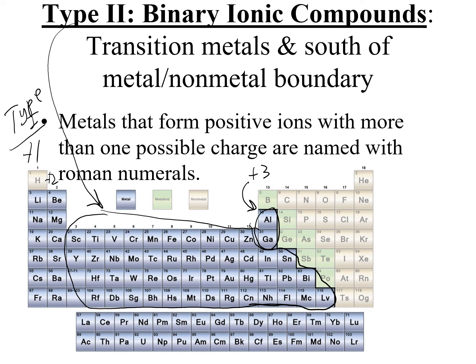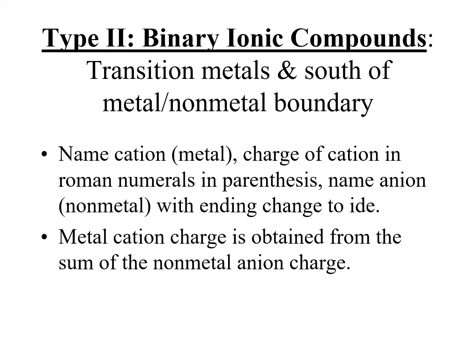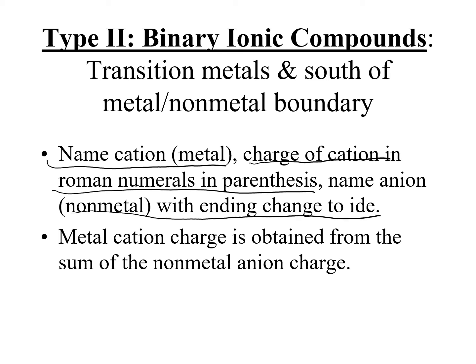Type 2 compounds will have Roman numerals in the name to tell us what the charge is. To determine the charge, we look at the anion. To name type 2 binary ionic compounds, first name the cation from the metal, then write the charge with Roman numerals in parentheses next to the name. The anion is the non-metal element name with the ending changed to 'ide.' The charge on the metal is determined from the sum of the non-metal anion charges.